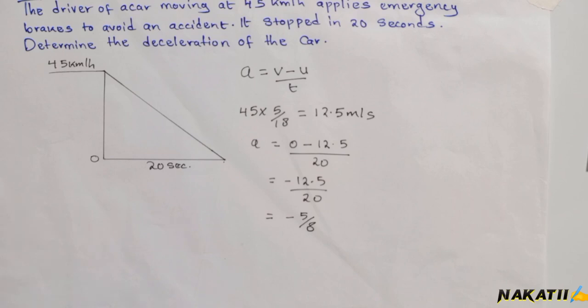This is acceleration, but the question asks for deceleration. Deceleration is simply negative acceleration. Therefore, our deceleration is 5 over 8 meters per second squared. That is how we approach this question.